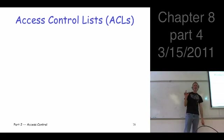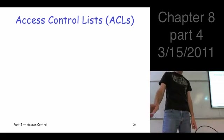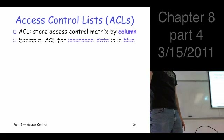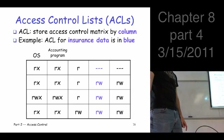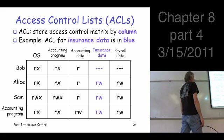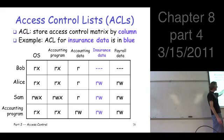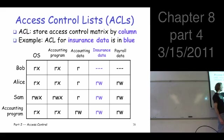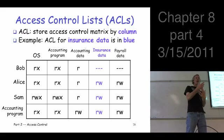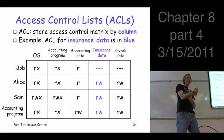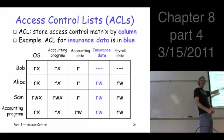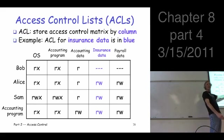There are two obvious ways to deal with this. One is to split the matrix up by column. For example, store each column with the corresponding resources. So for the insurance data, we would have this column of the matrix, and anytime anybody wants to access the insurance data, there's a little file that goes with it and the operating system consults that to see if the person is allowed to do what they're trying to do.